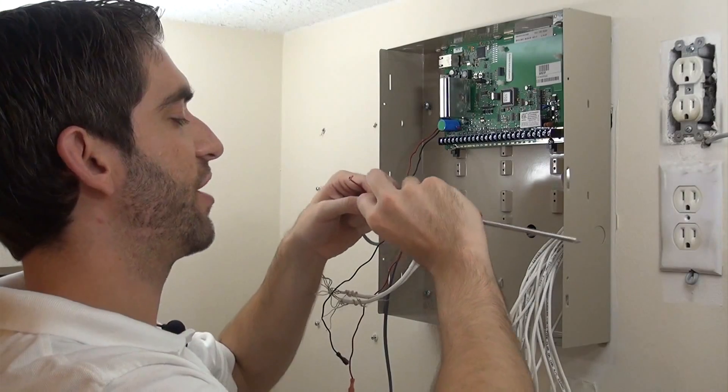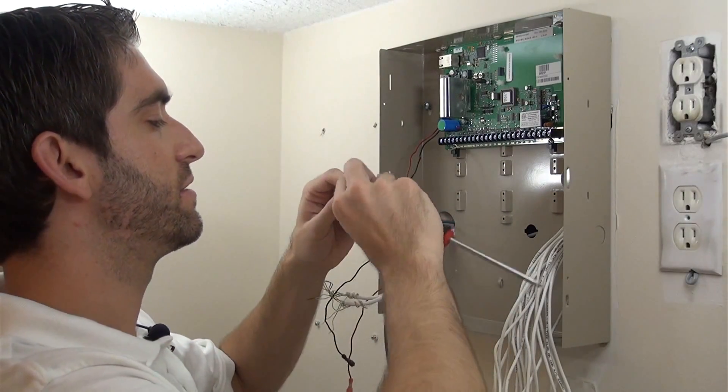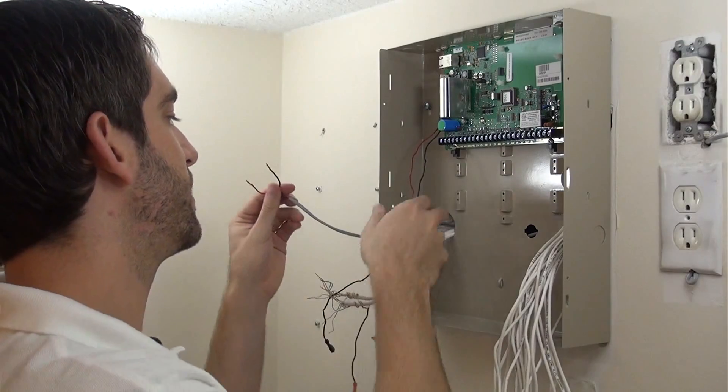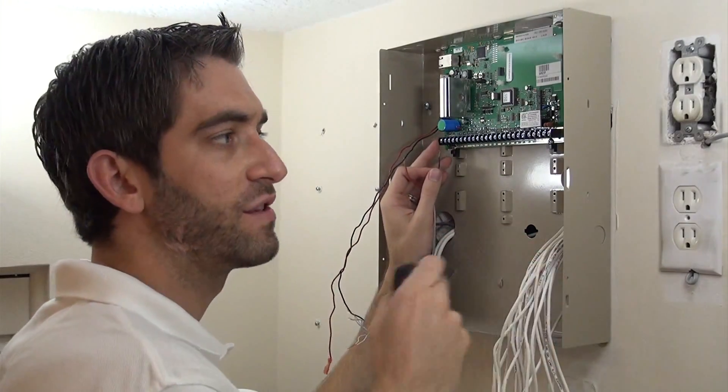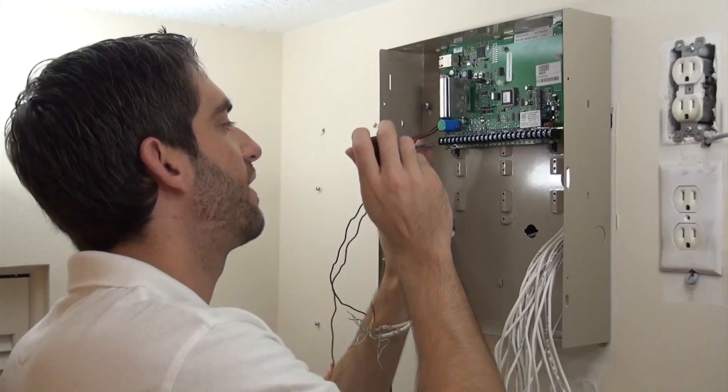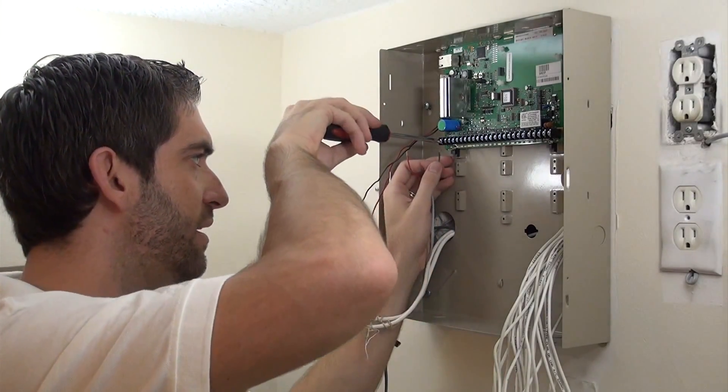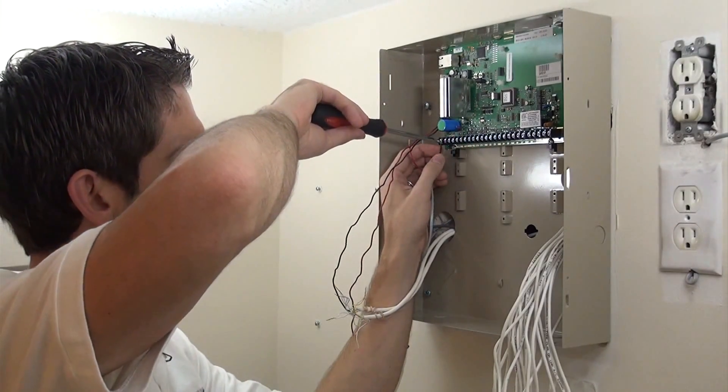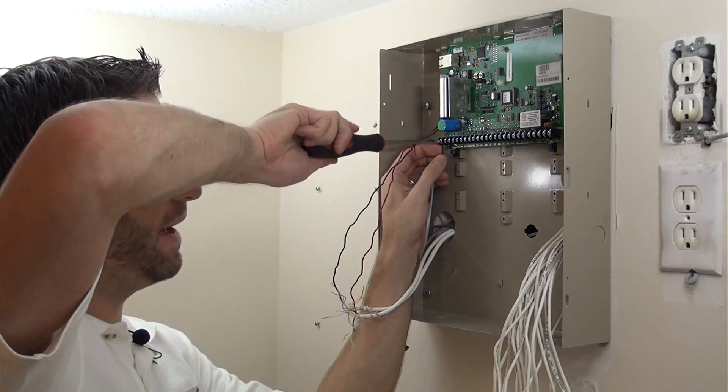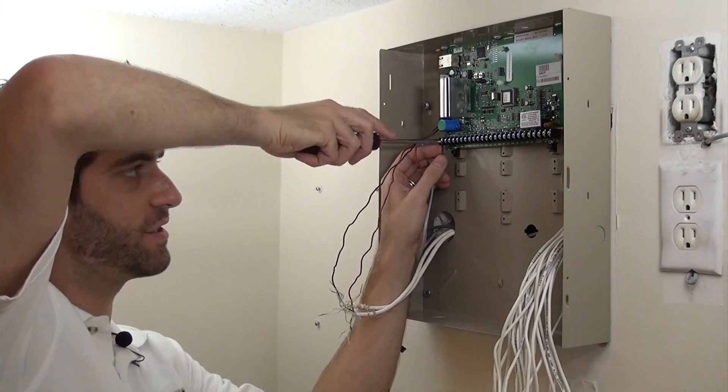Again we've got stranded wire here, so we just want to twist these down so it's a nice, clean connection into the screw terminals. Because the transformer is not plugged in, these wires are not live. So you unscrew the terminal, it gives you a little bit of room underneath the metal bracket and the back of the terminal, and then you just screw it down for a nice, tight connection.